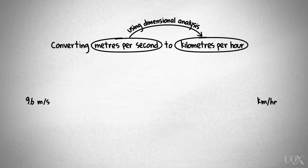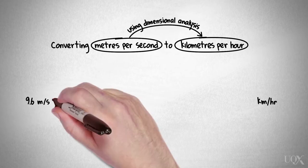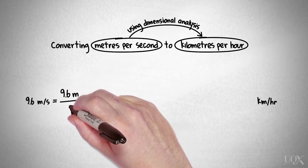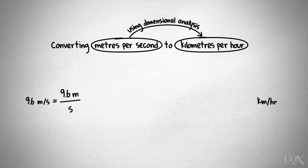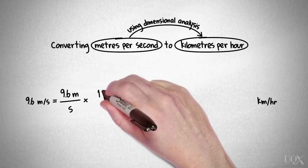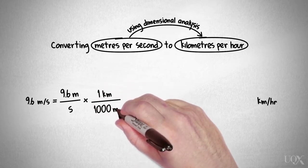Using dimensional analysis, we can solve this problem by multiplying a series of conversion factors. First, let's write the speed as a fraction. Then, we will multiply it by the conversion factor for kilometres to metres, 1000.